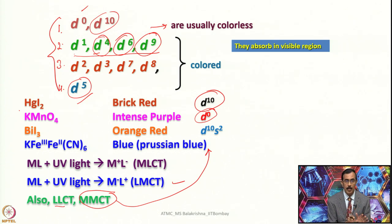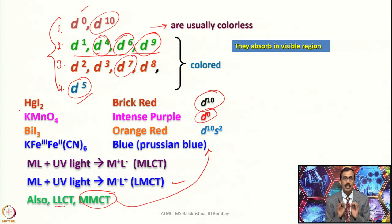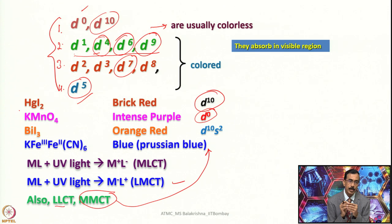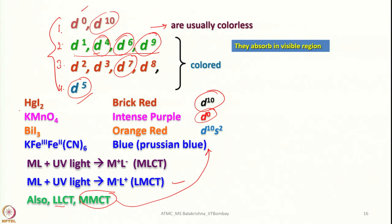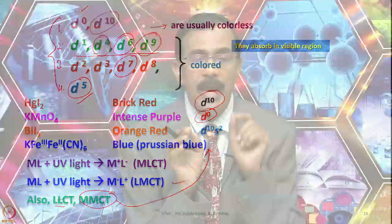We can now see similarities among d¹, d⁴, d⁶, and d⁹. Similarly, the third group includes d², d³, d⁷, and d⁸: d² has two electrons, d³ is two less than half-filled, d⁷ is two more than half-filled, and d⁸ is two less than completely filled. It appears that electronic configurations in category 2 likely show one type of spectrum or transitions, and similarly for category 3. The fourth unique category is d⁵, the completely half-filled configuration. The significance of this classification will become clearer as we progress.